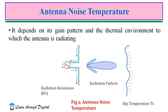Suppose if we consider a transmitting antenna is lossless, the antenna temperature is equal to the source temperature or sky temperature. This figure illustrates the antenna noise temperature. Here, this is the antenna we consider for radiation — it is transmitting electromagnetic energy in this direction. This is the radiation pattern of the antenna, and this is the temperature at the sky, or source temperature TS. When this antenna is lossless, the antenna temperature TA is equal to TS.